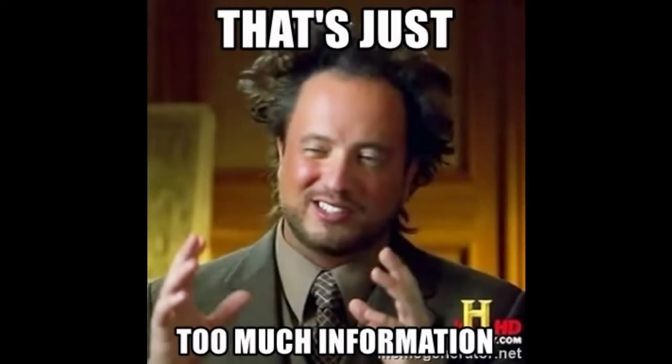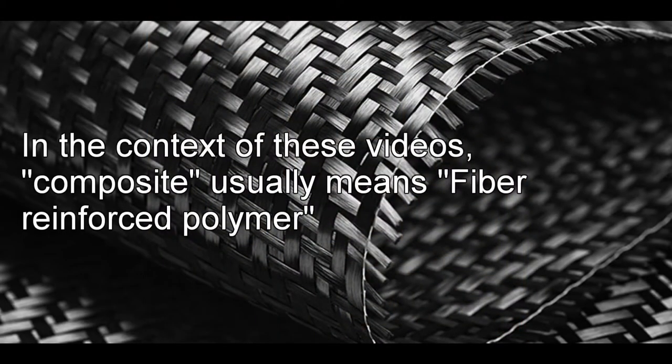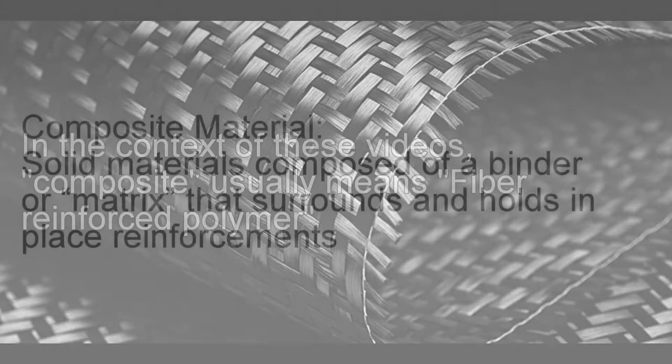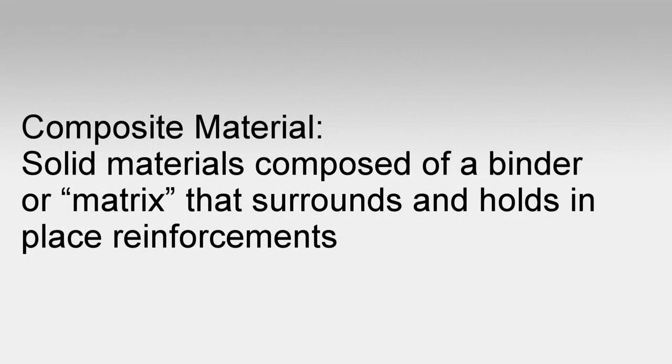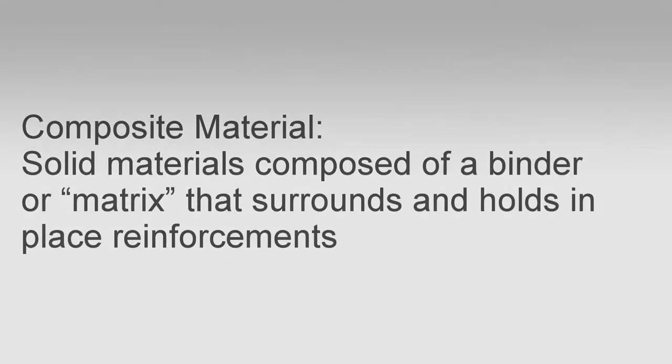Unfortunately, that's too broad for this video series, so we'll focus on the subset of composite materials that are fiber reinforced plastics or polymers. So far as a formal definition, composite materials are solid materials composed of a binder or matrix that surrounds and holds in place reinforcements.